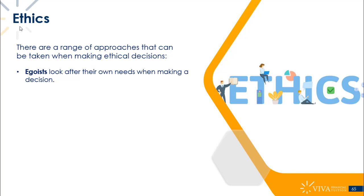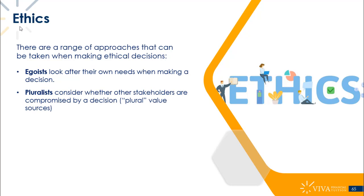In the case of an organization, you can think of an egoistic organization as one that only thinks about its own interests and disregards all other stakeholders. Pluralists then consider whether other stakeholders are compromised by a decision — they're thinking of value not just from the internal perspective, but from the external or stakeholder perspective as well, and trying to balance all of those considerations.